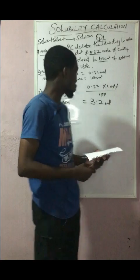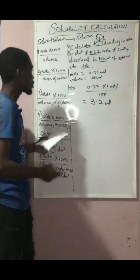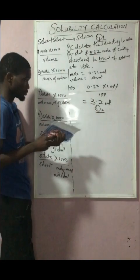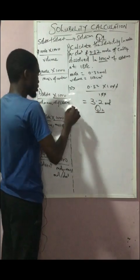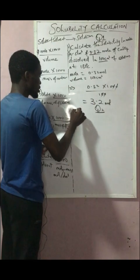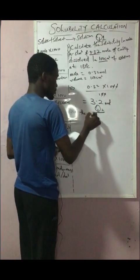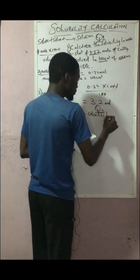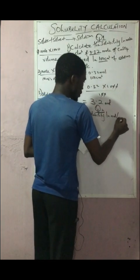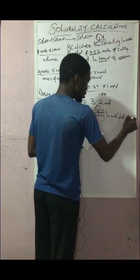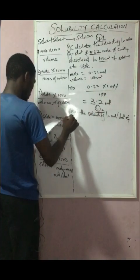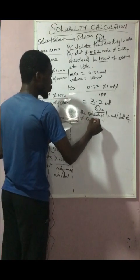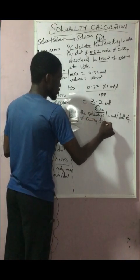Let's take a look at the second question, which is a JAM past question. Question two states: calculate the solubility in mol per dm³ of 2.0 grams of copper sulfate dissolved...